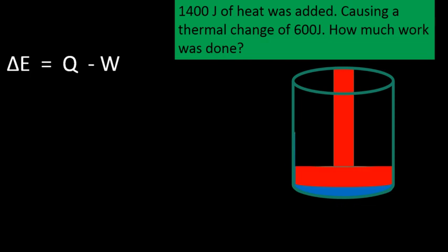So here we have a word problem. It states 1400 joules of heat was added causing a thermal change of 600 joules, how much work was done? So we add 1400 joules of heat into the system and the result, causing a thermal change of 600 joules, meaning that the outcome is a total of 600 joules, and then we're asking for how much work is done.